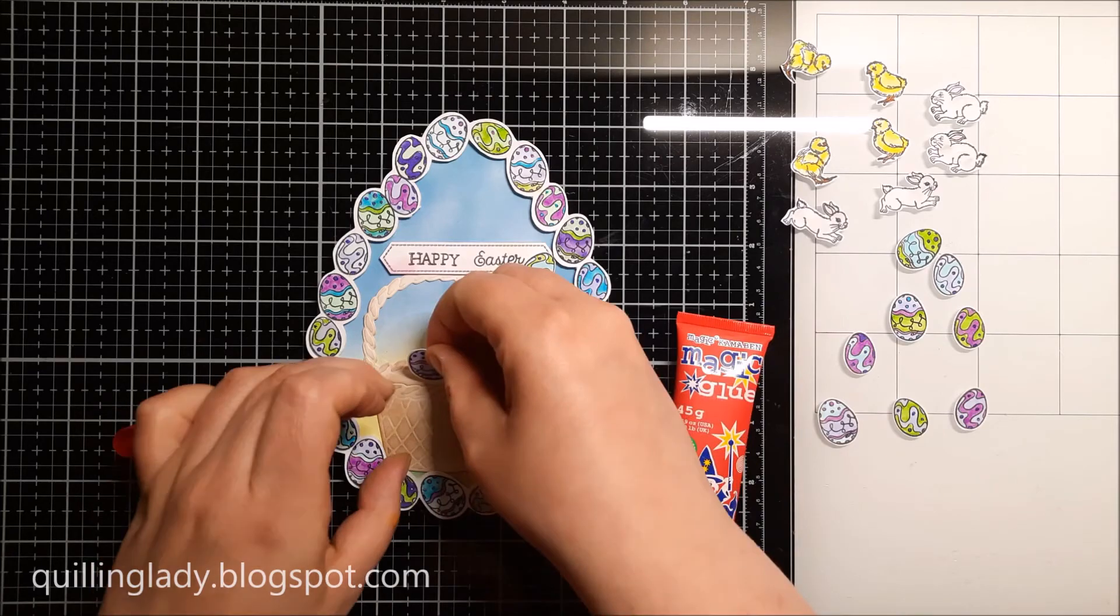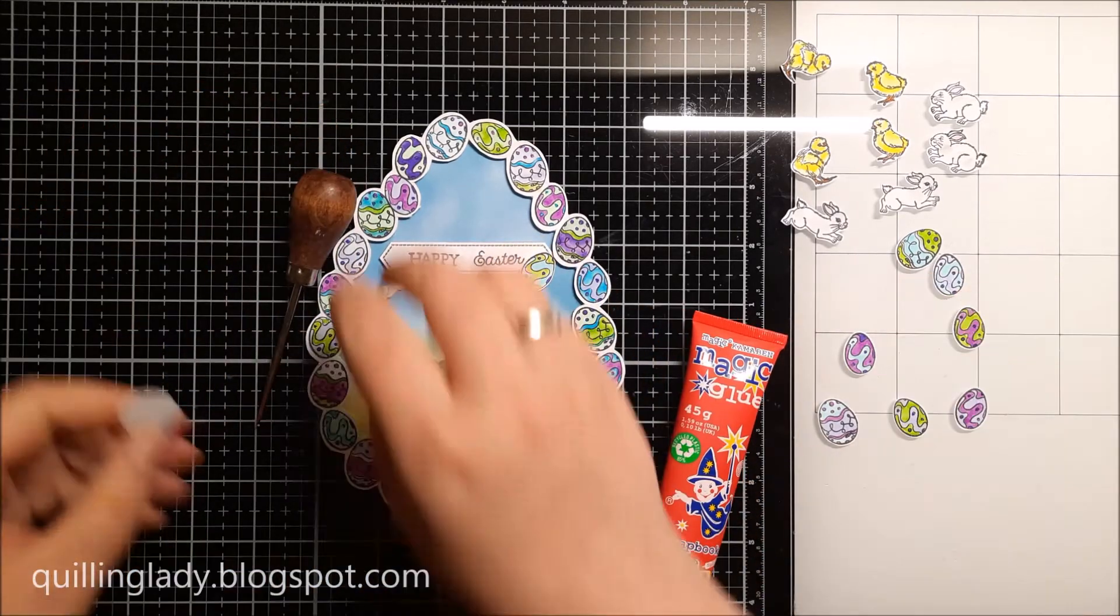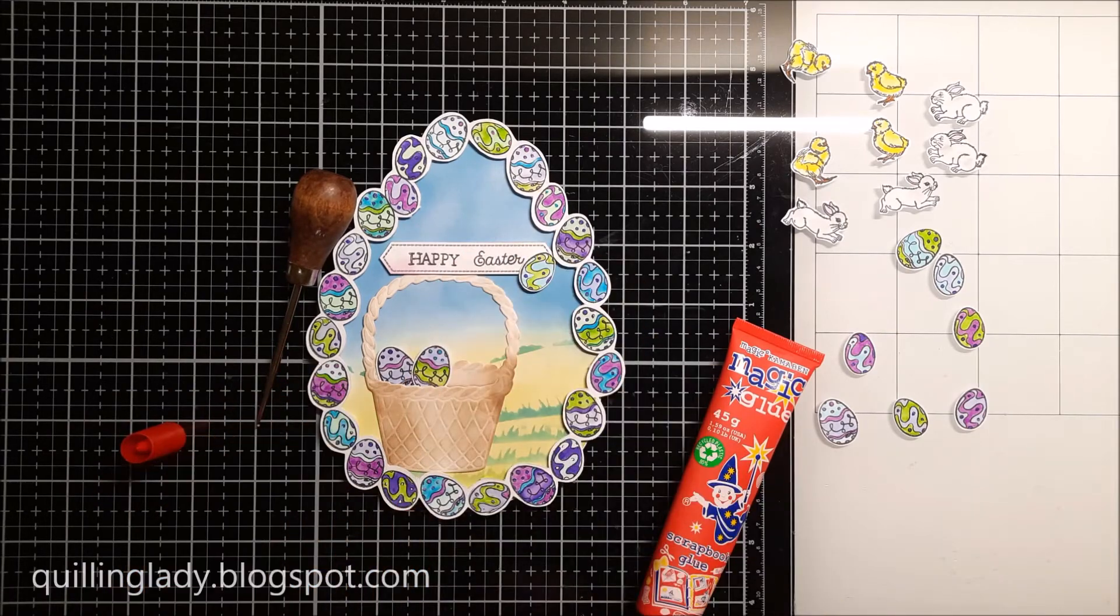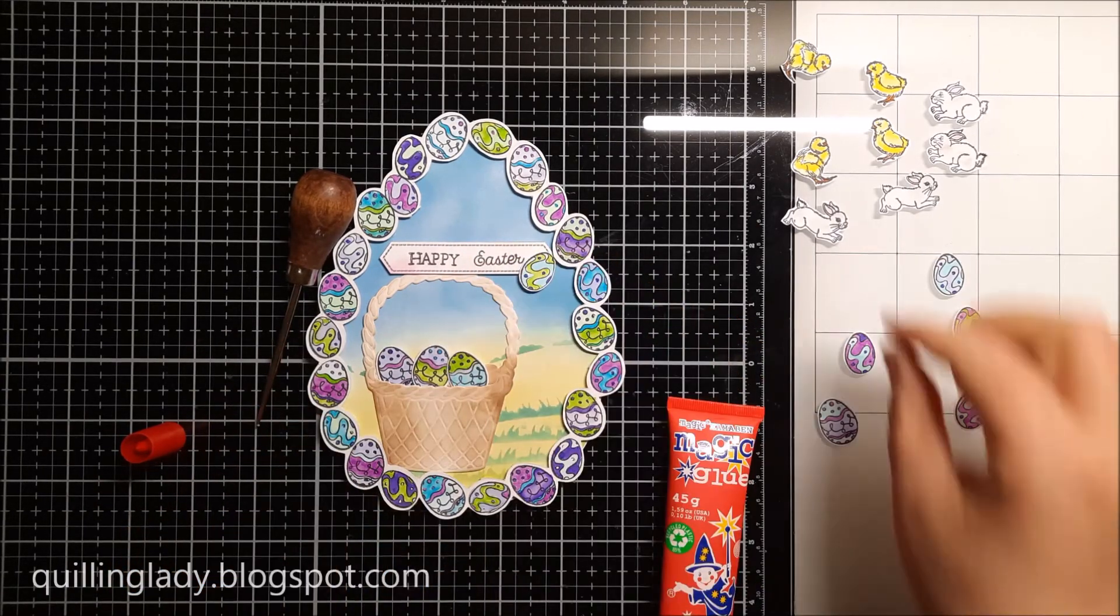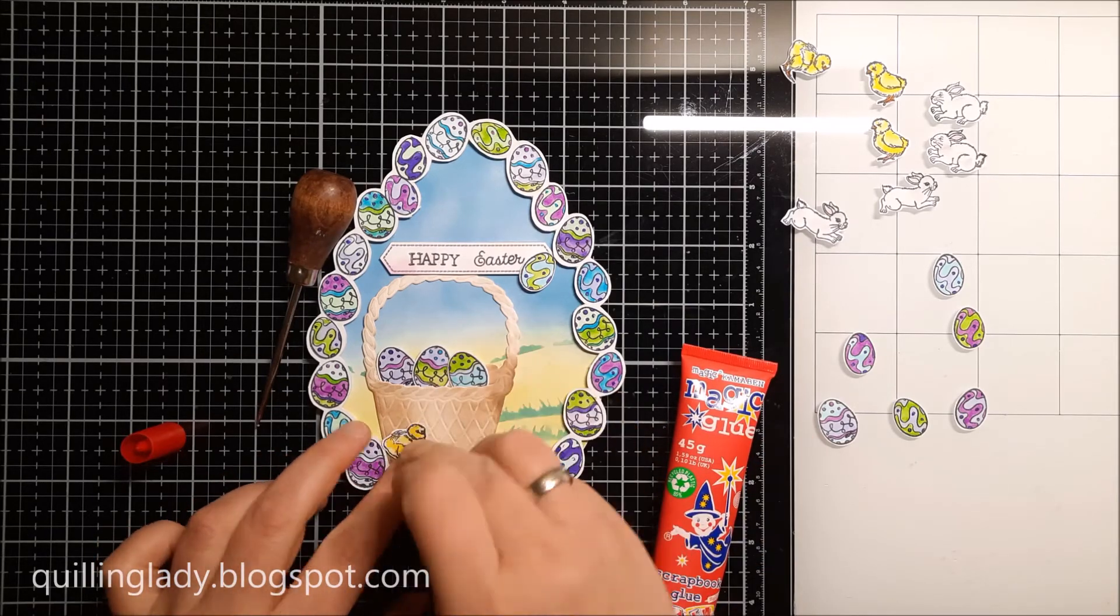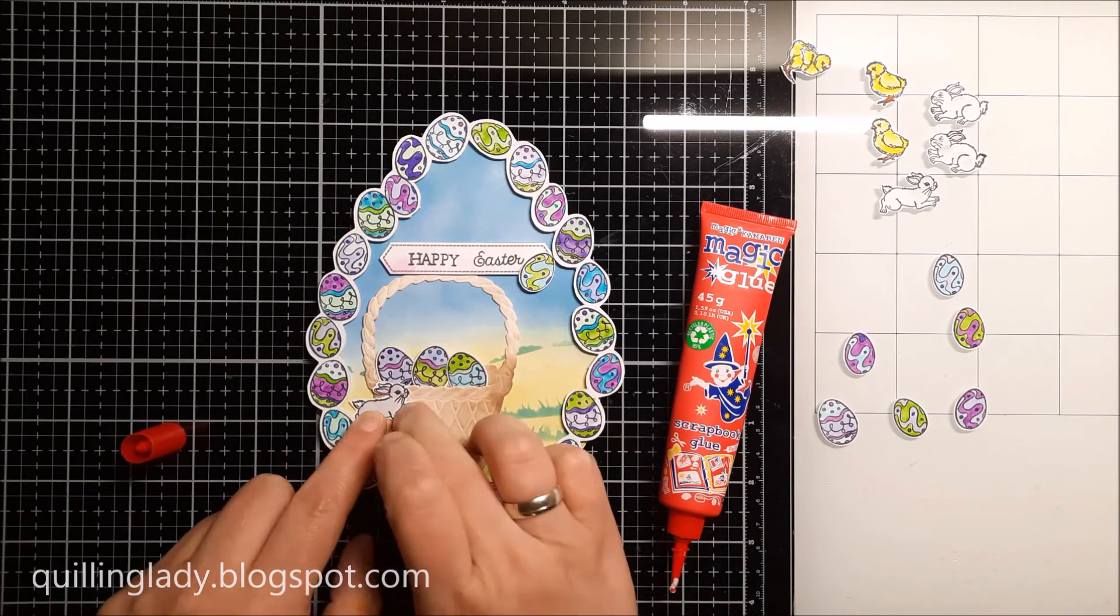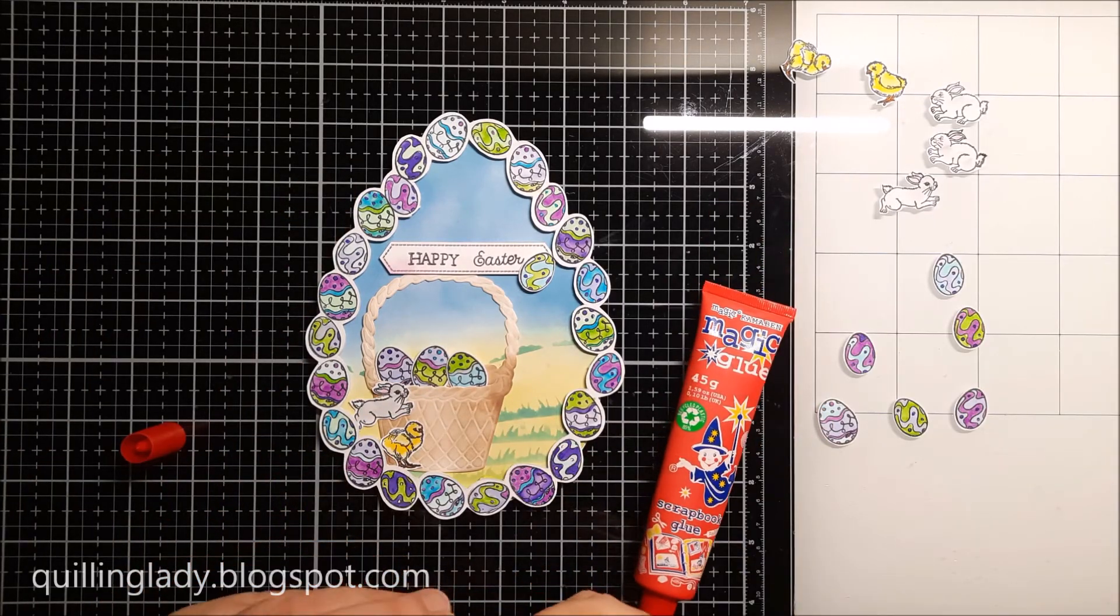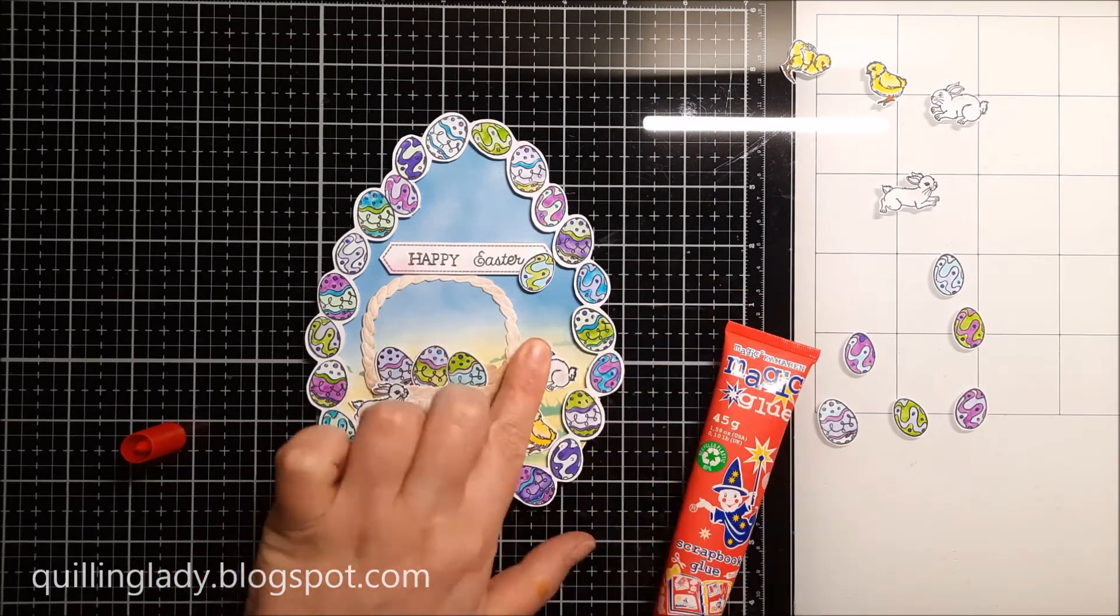Off-camera I actually created more Easter eggs the same way I created the frame. Using my pokey tool, I just raised the inside of the basket and this way I was able to put some Easter eggs inside. Adding those chicks and bunnies, I think it adds so much to the card.